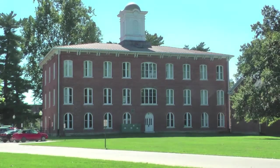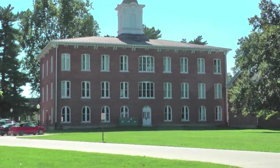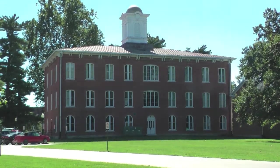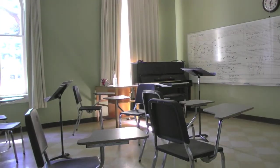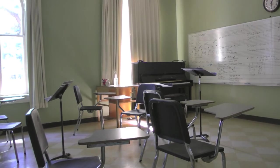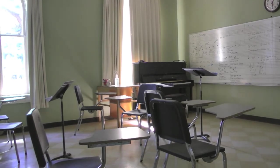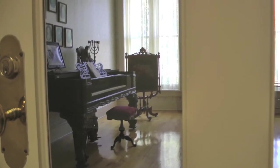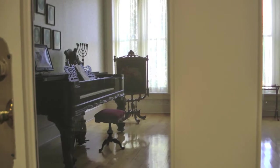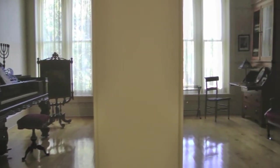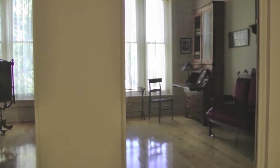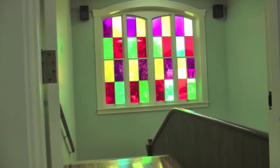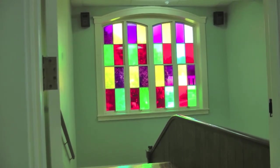This is another one of our academic buildings — it is the music building. This is one of the classrooms inside the music building that are used for some of the music classes. This is one of our rooms that is used as a museum to show what the campus was like and life was like when the campus was first started. This is one of the many stained glass windows that are still located in the music building.